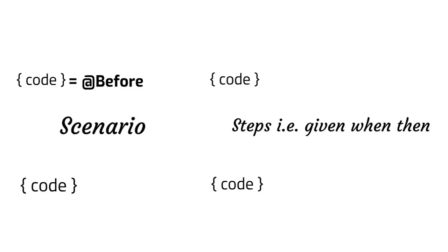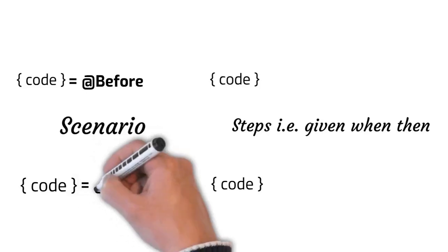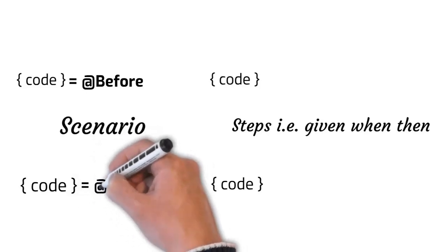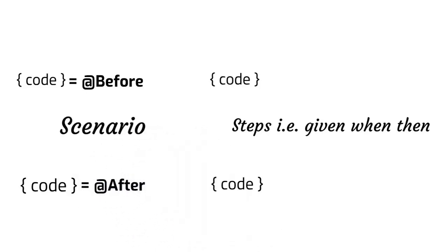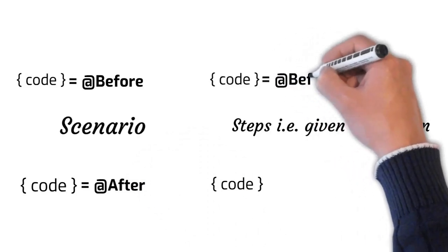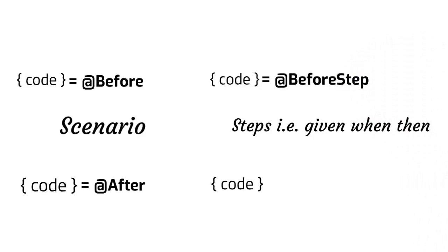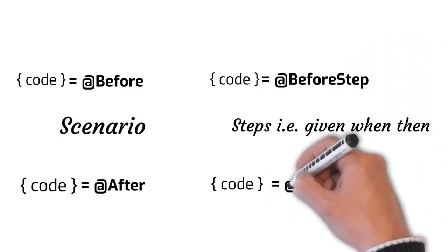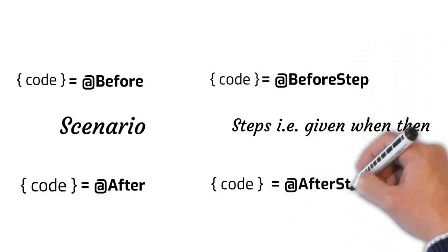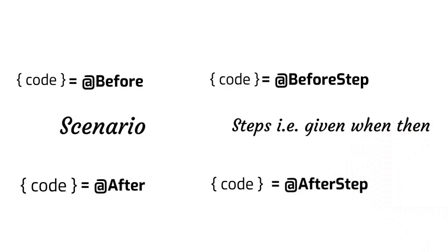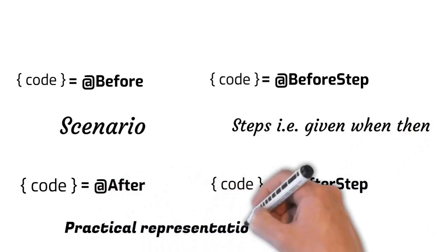To implement this in our code, we use the annotation @Before to mark the code that should run before every scenario, and @After to mark the code that should run after every scenario. Similarly, we use @BeforeStep and @AfterStep to mark the code that needs to run before and after every step.